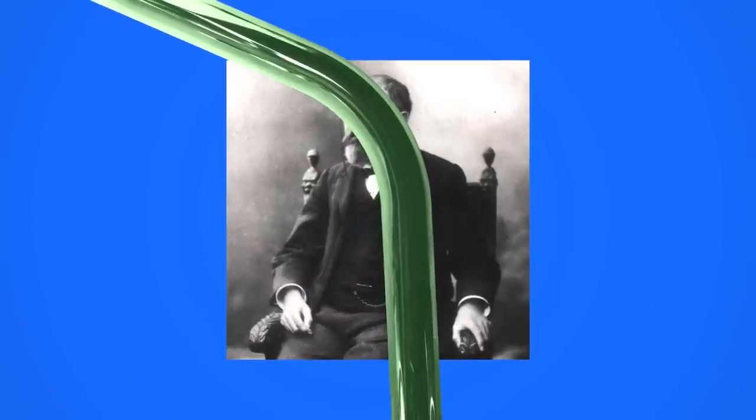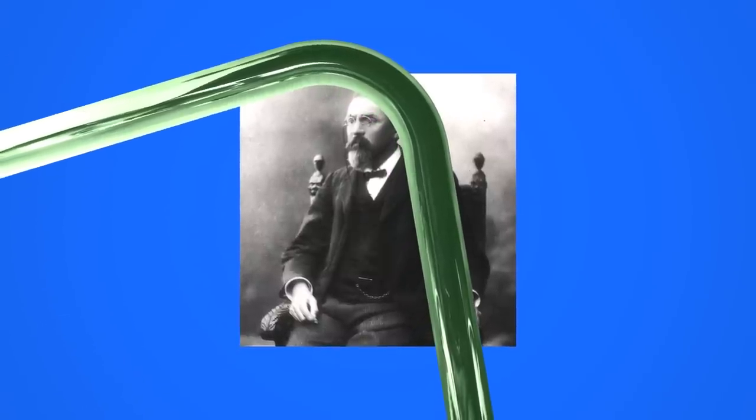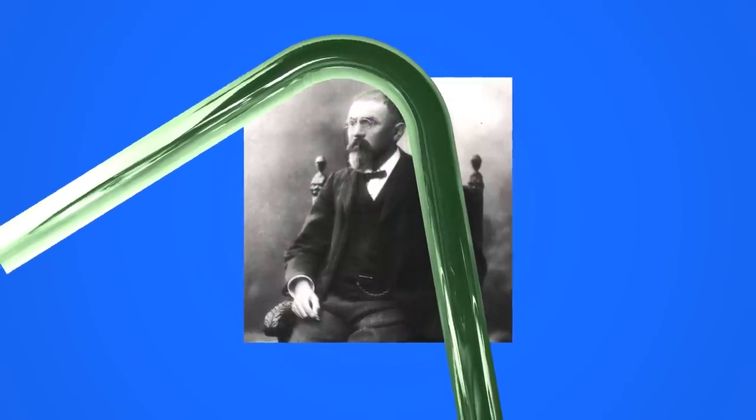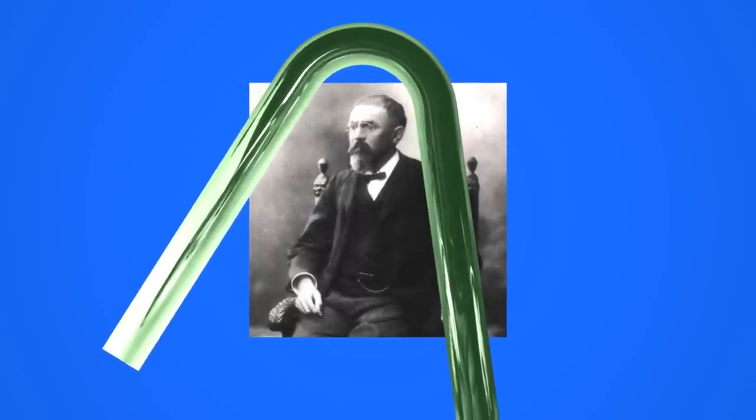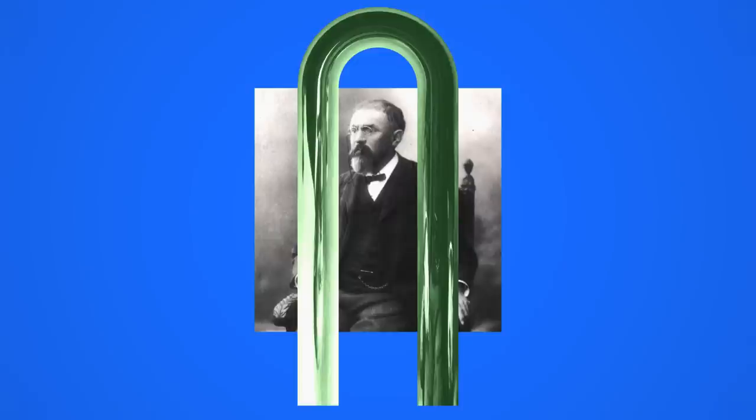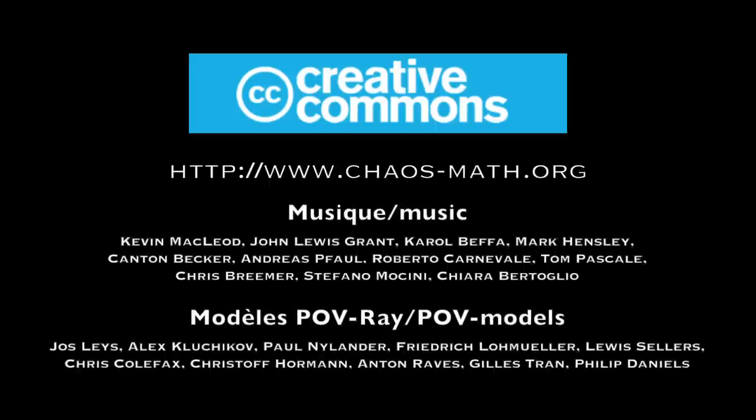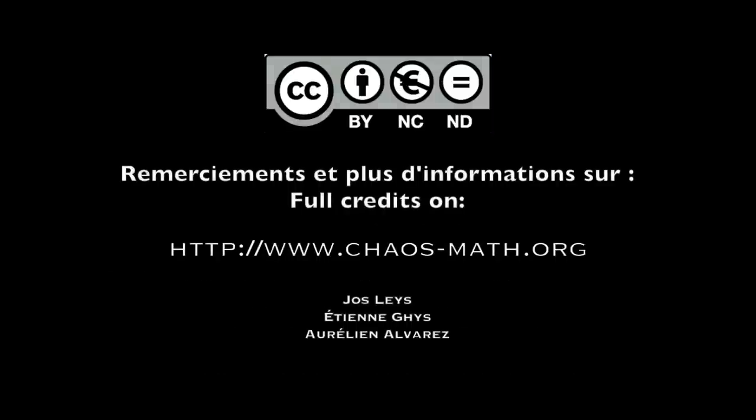Coexistence of chaos, and hence the instability of individual trajectories, with structural stability, a global property, is absolutely remarkable. I'm unstable, but the world around me is stable. Very reassuring.